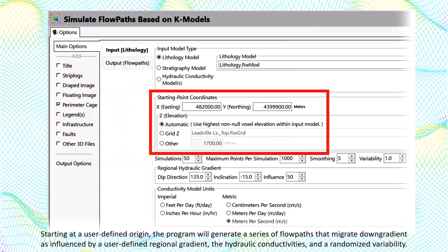Starting at a user-defined origin, the program will generate a series of flow paths that migrate downgradient as influenced by a user-defined regional gradient, the hydraulic conductivities properties, and a randomized variability.